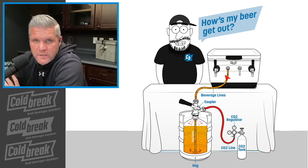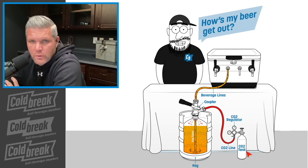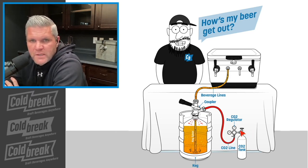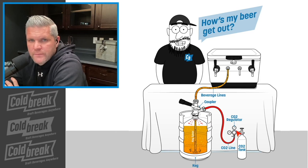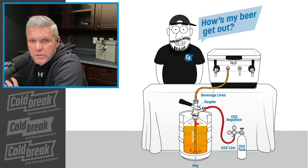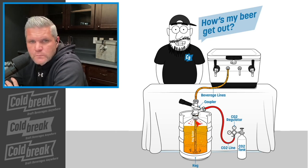We're going to focus on everything beyond that from here. CO2 is always attached to a primary regulator. The regulator feeds the keg, and the CO2 pushes down on the beer.